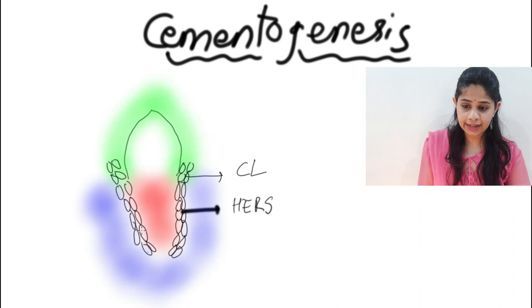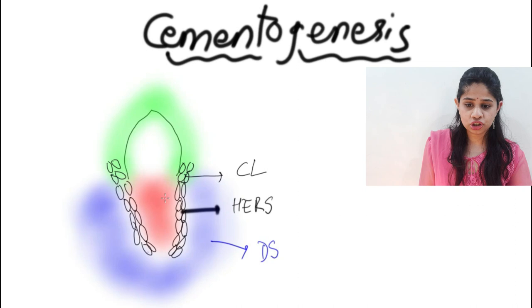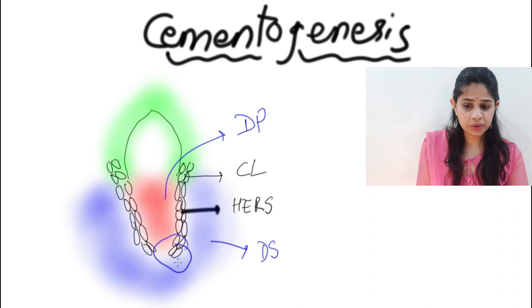The dental sac is on the outer aspect and the dental papilla is on the inner portion. In the apical portion there is a bend in Hertwig's epithelial root sheath, and this is called the epithelial diaphragm.